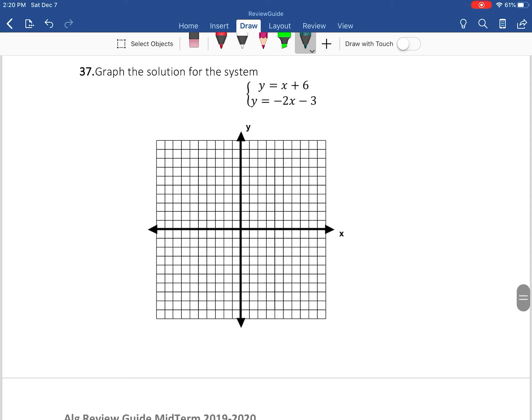Number 37, we're going to graph the solution for the system. So my first equation is up here at six. I have a y-intercept of six. So one, two, three, four, five, six. And I have a positive slope.